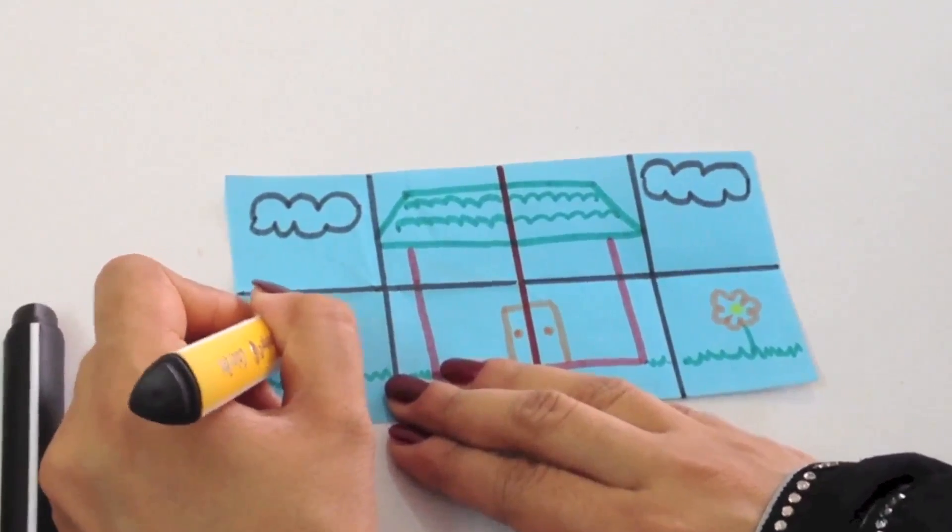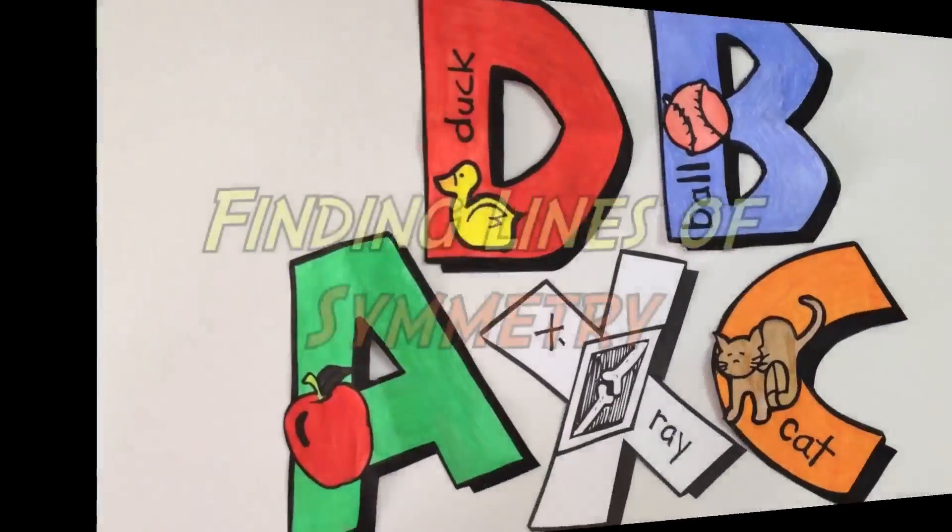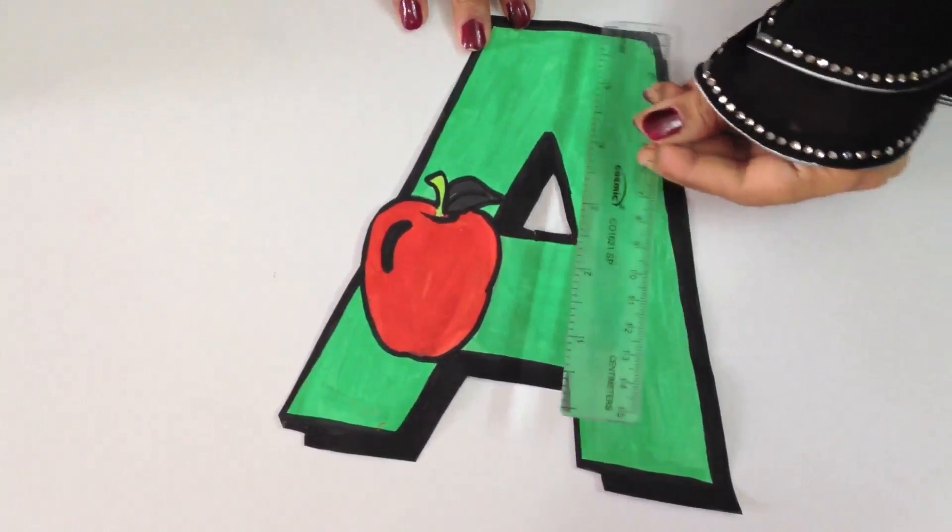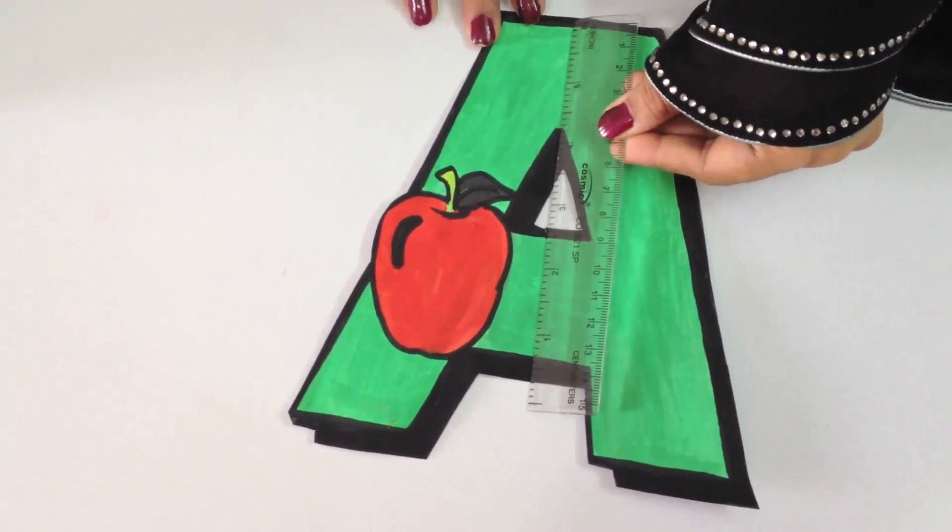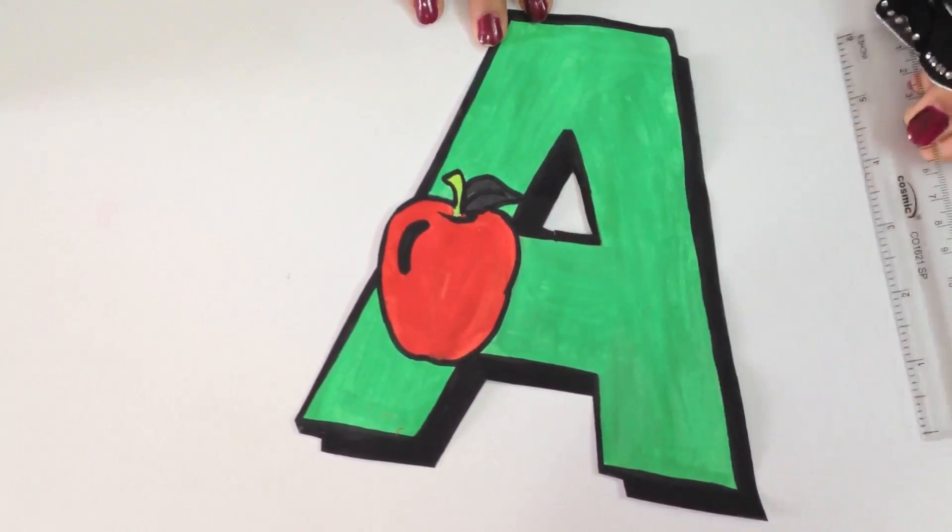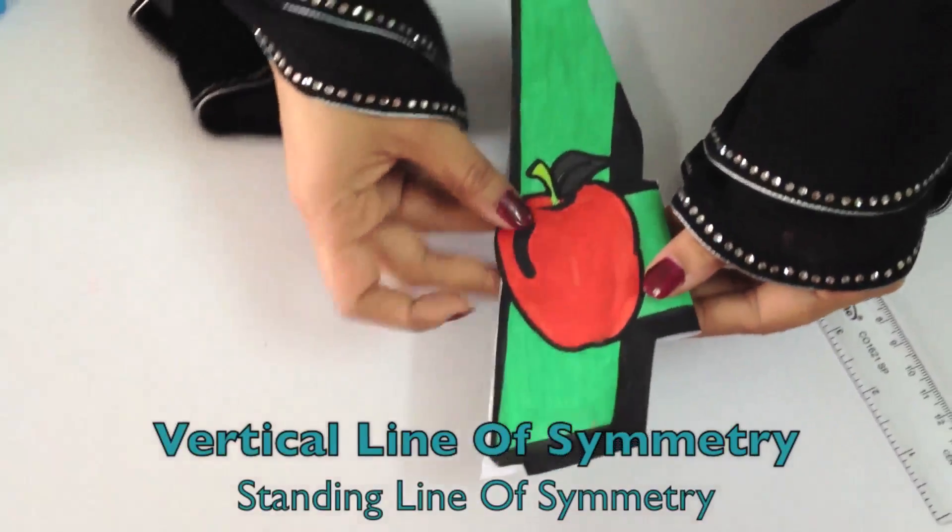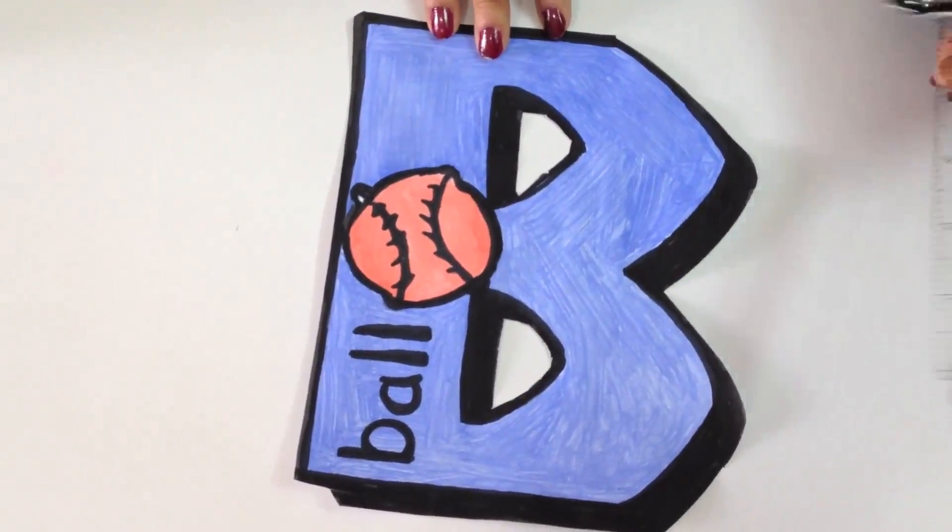Now some letters are symmetrical. A is a symmetrical letter. It has a vertical line of symmetry. It does not have a horizontal line of symmetry. We can see the line of symmetry here. B does not have a vertical line of symmetry.